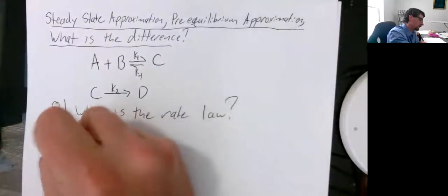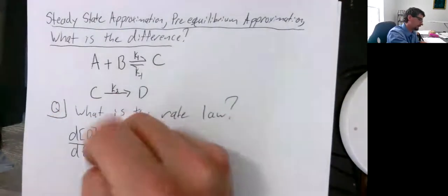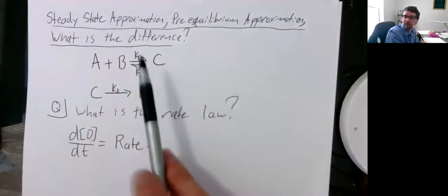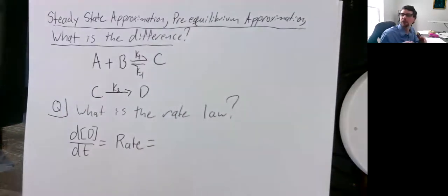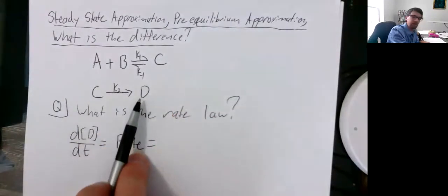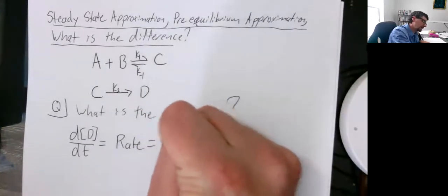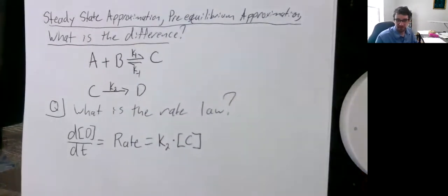In this case, we're looking at the change in concentration of D with respect to time. This will be equal to our rate, and since we're assuming these are elementary steps, meaning they're steps that can't be broken down any further, we can determine the rate law. We're looking for the rate of appearance of D. That's dictated by K2 times the concentration of C. Now the question becomes, is this a good rate law? No, it's not.